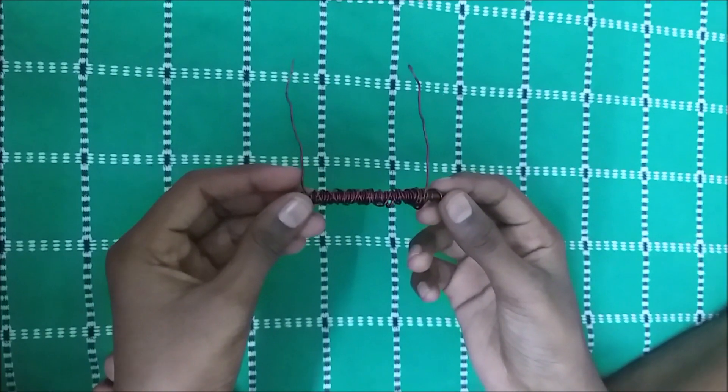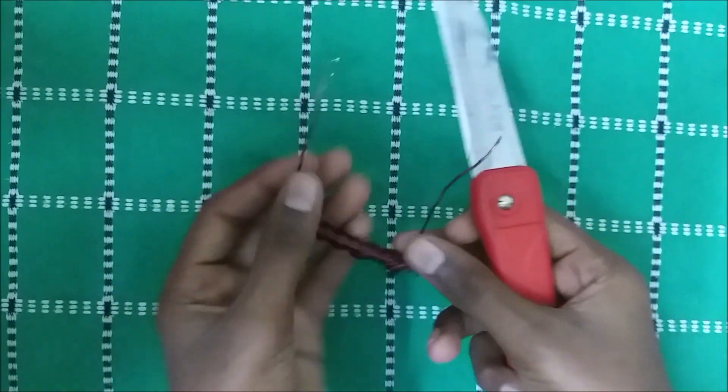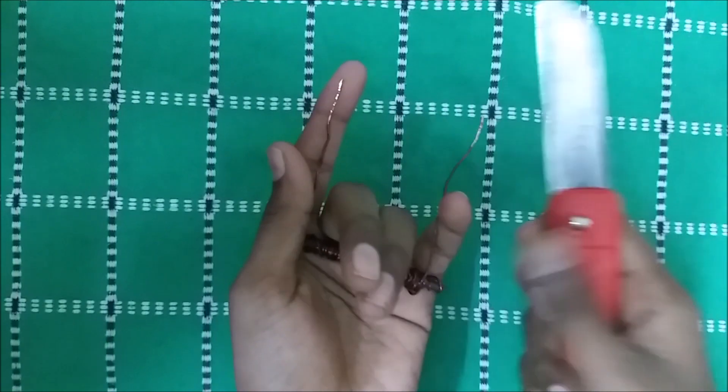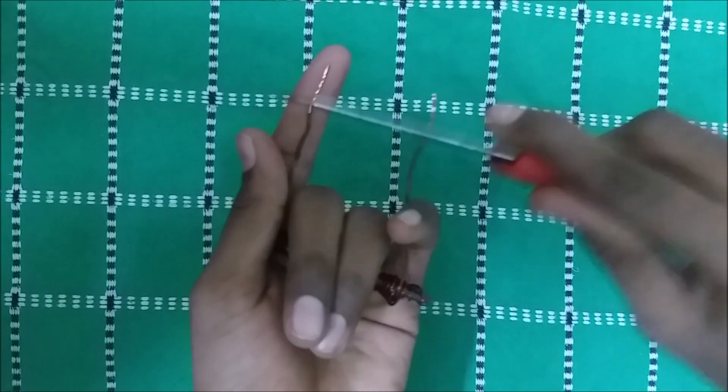Leave two strips of wire at both ends of the copper wire. Now we will take the knife and remove the insulation of the ends.